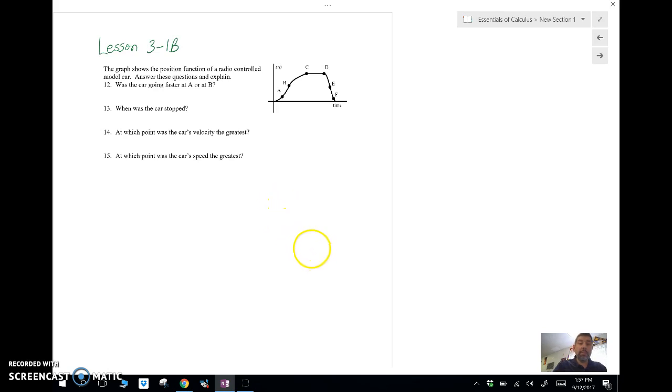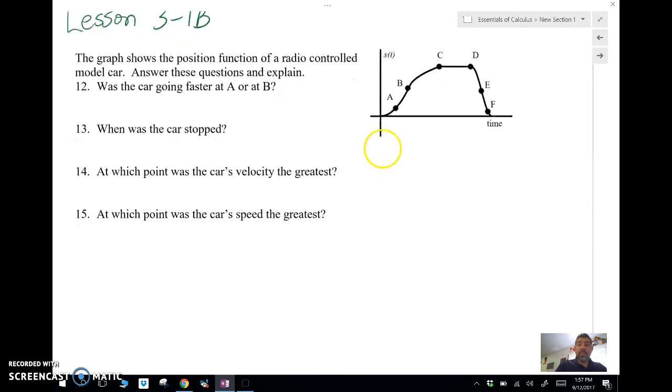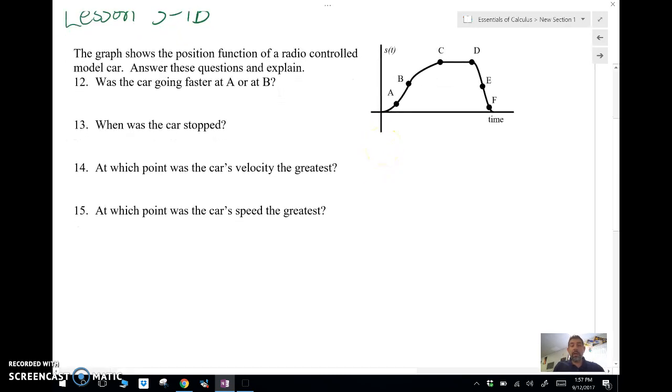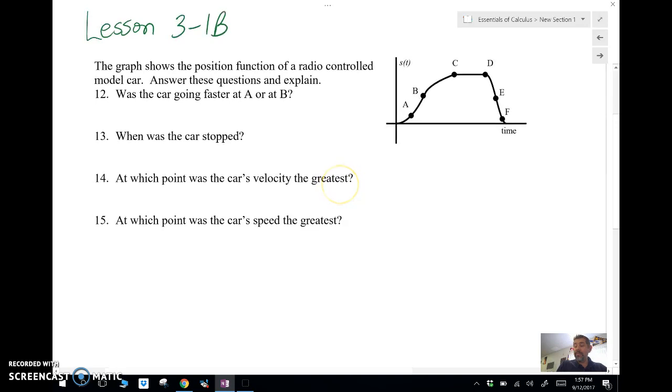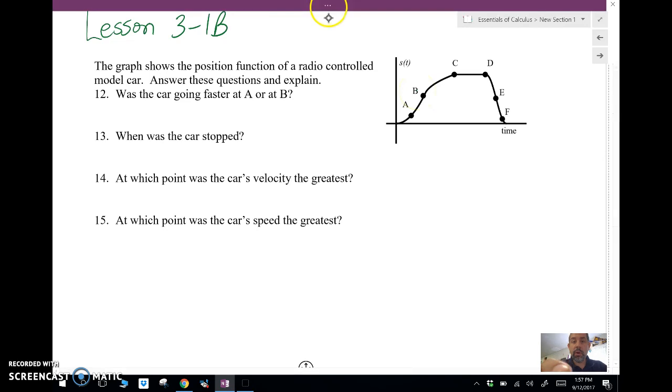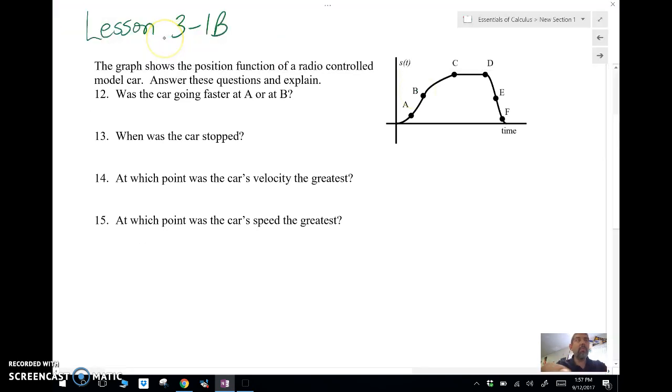We'll take a look at these other examples. We've got a graph, a position function graph of a radio-controlled model car. We'll answer some questions about this graph. Was the car going faster at A or at B? Well, when we do this, we're going to also explain why. We can't just leave it at that.